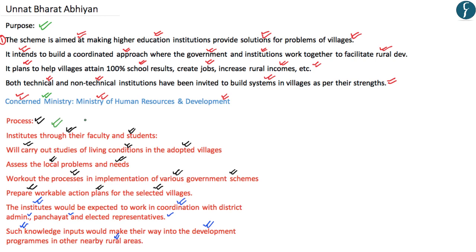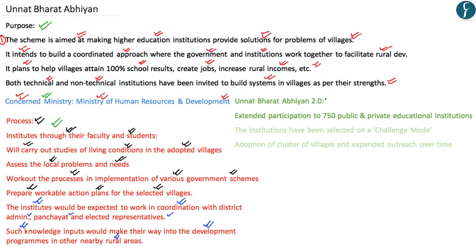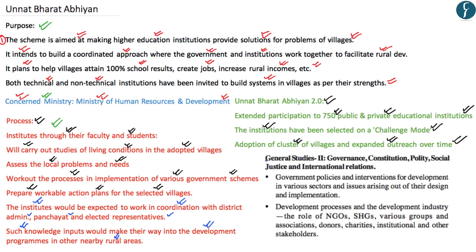Unnat Bharat Abhiyan 2.0 extends participation to 750 public and private educational institutions, selected on a challenge mode. These institutions will adopt a cluster of villages and gradually expand their outreach over time. For UPSC mains, this is relevant in GS Paper 2 under government policies for development in various sectors and the role of institutions.